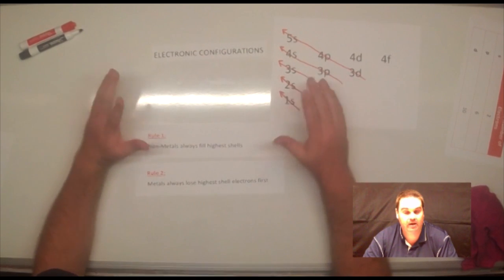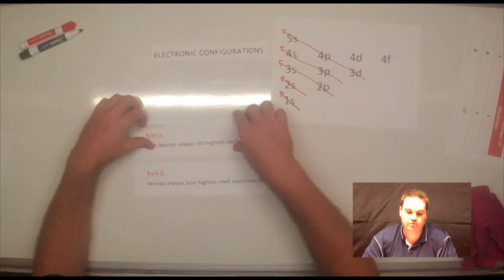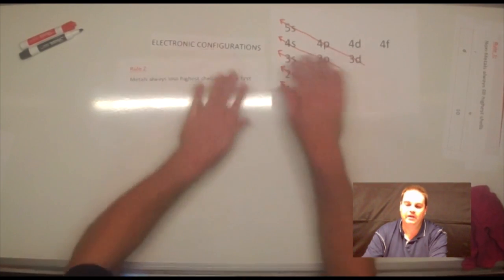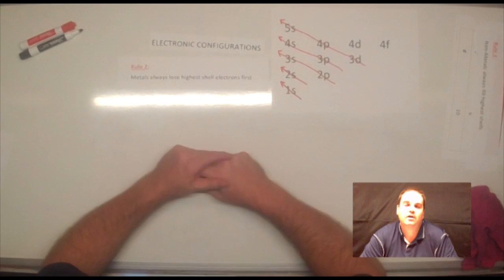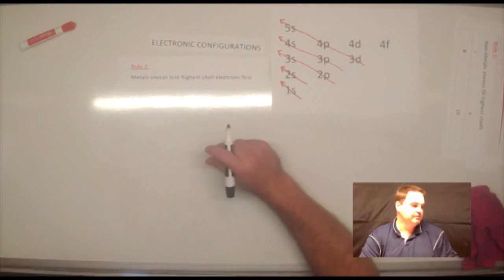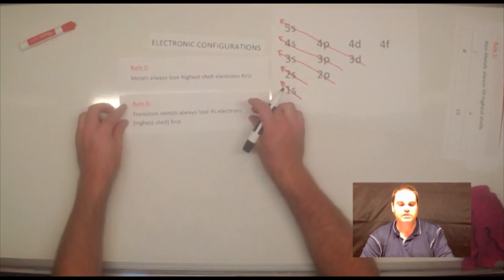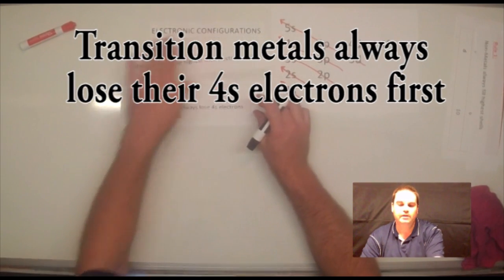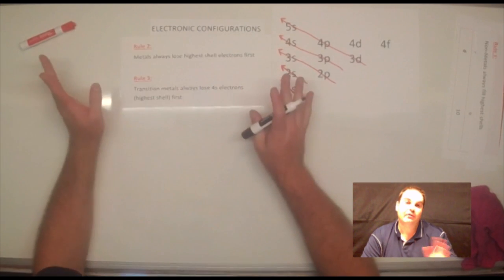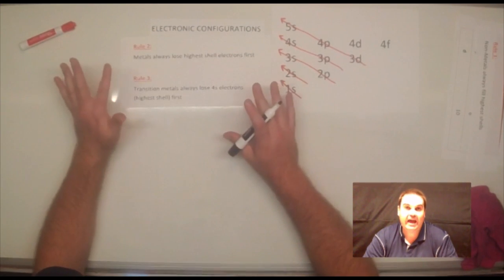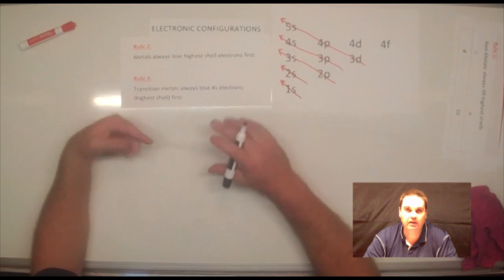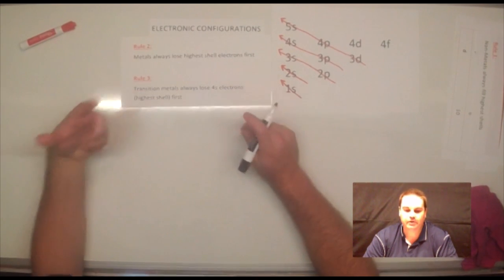I'm going to introduce this concept around transition metals and they're going to follow this same rule, that metals always lose their highest shell electrons first. However, I'm going to introduce something a little bit different. Transition metals always lose their 4s electrons, highest shell electrons first. Every transition metal that you need to do has that electronic configuration with a 4s. So I'm going to go through and show you some of those.